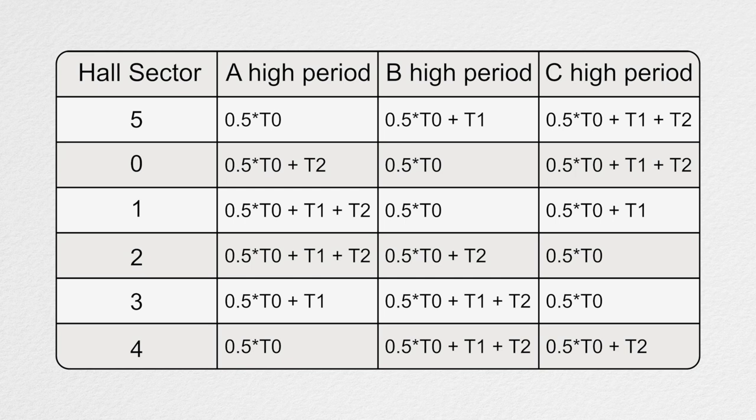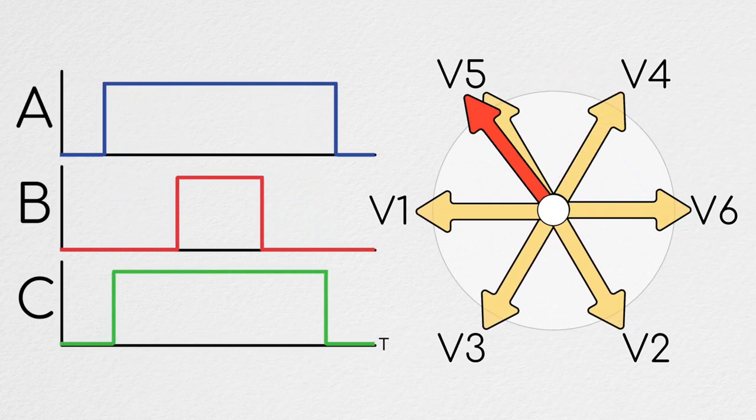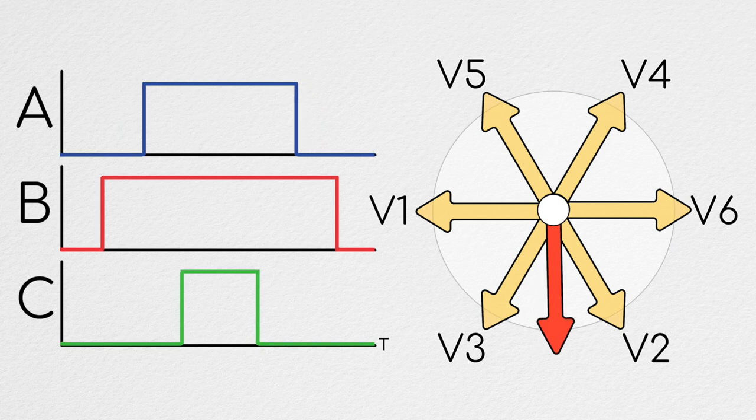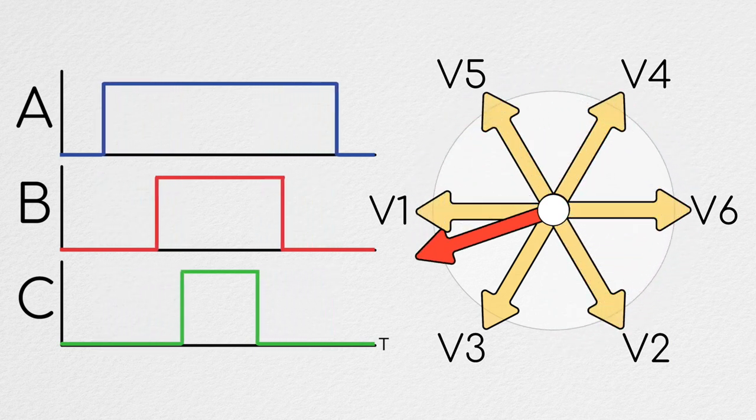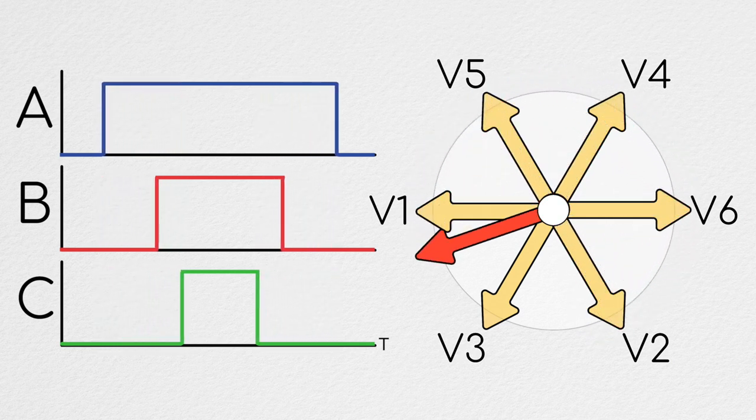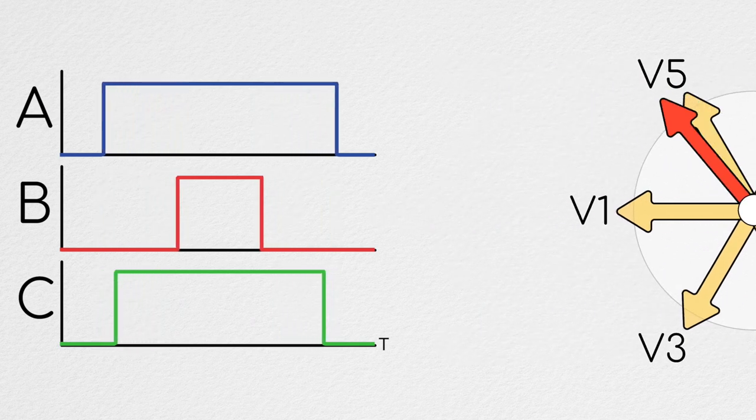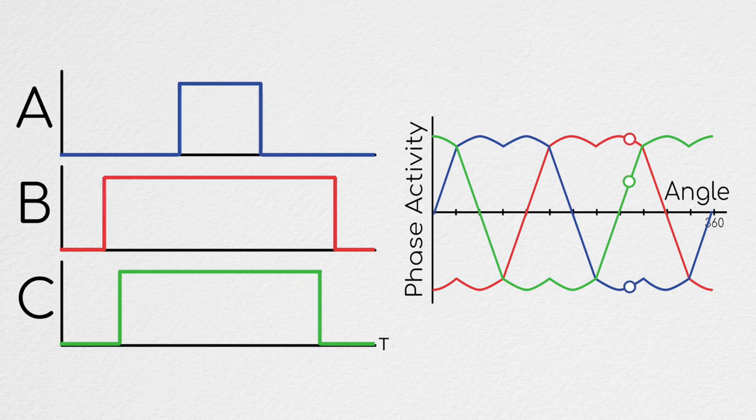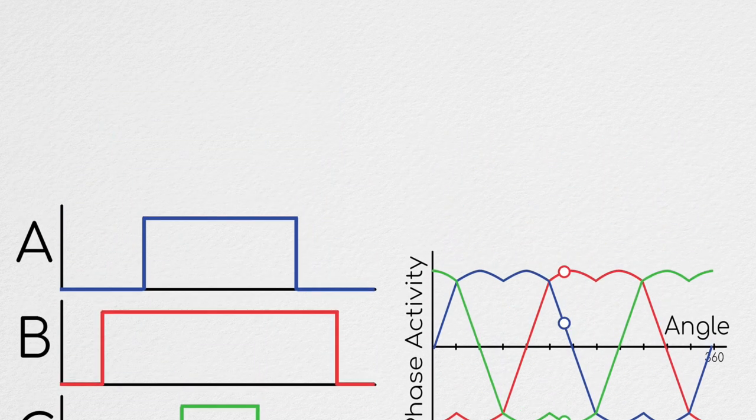To help better visualize what these PWM output signals will look like, I will show the PWM signals of each of our three phases as we shift the orientation of the rotor. Note that the upper position indicates a leg of the bridge being connected to high voltage, while a low position indicates it being connected to ground. And for the whole of this animation, we're commanding a 50% duty cycle.